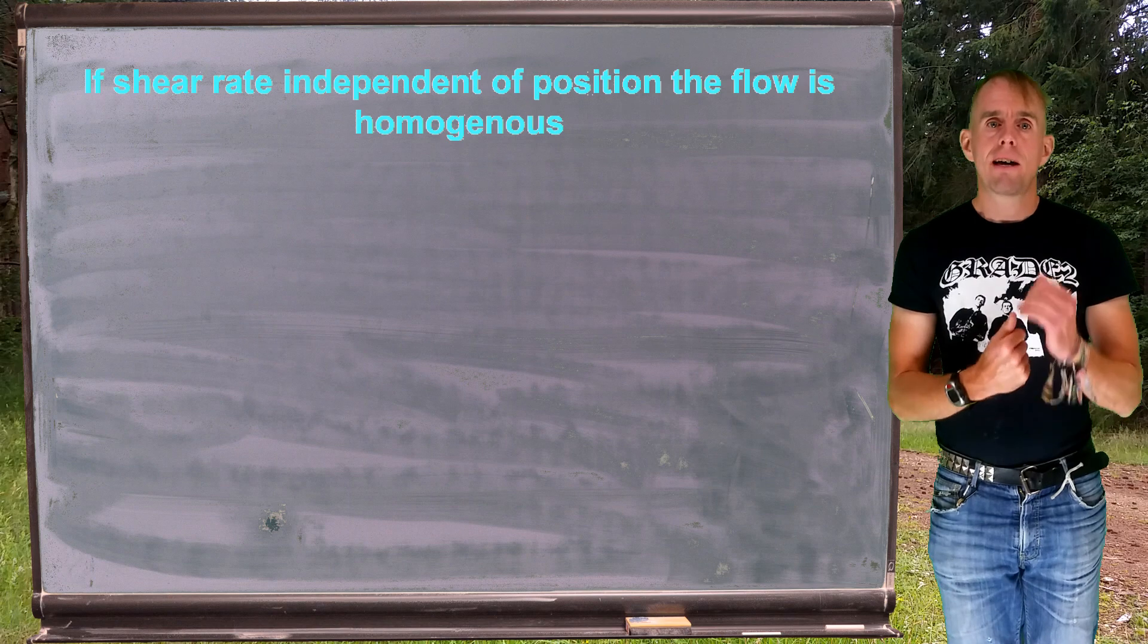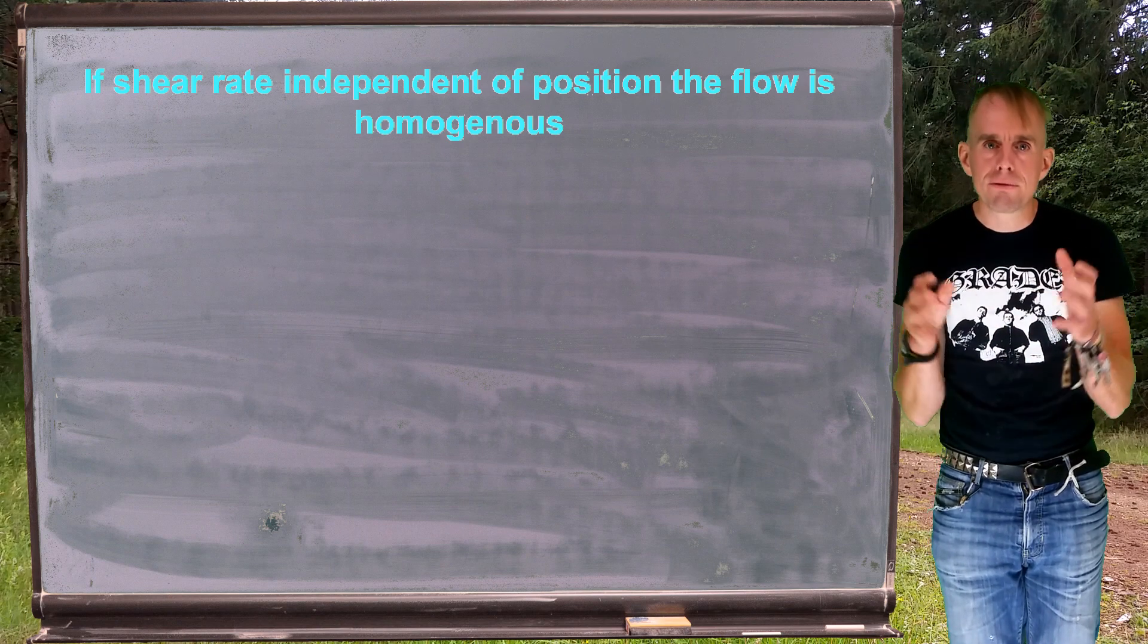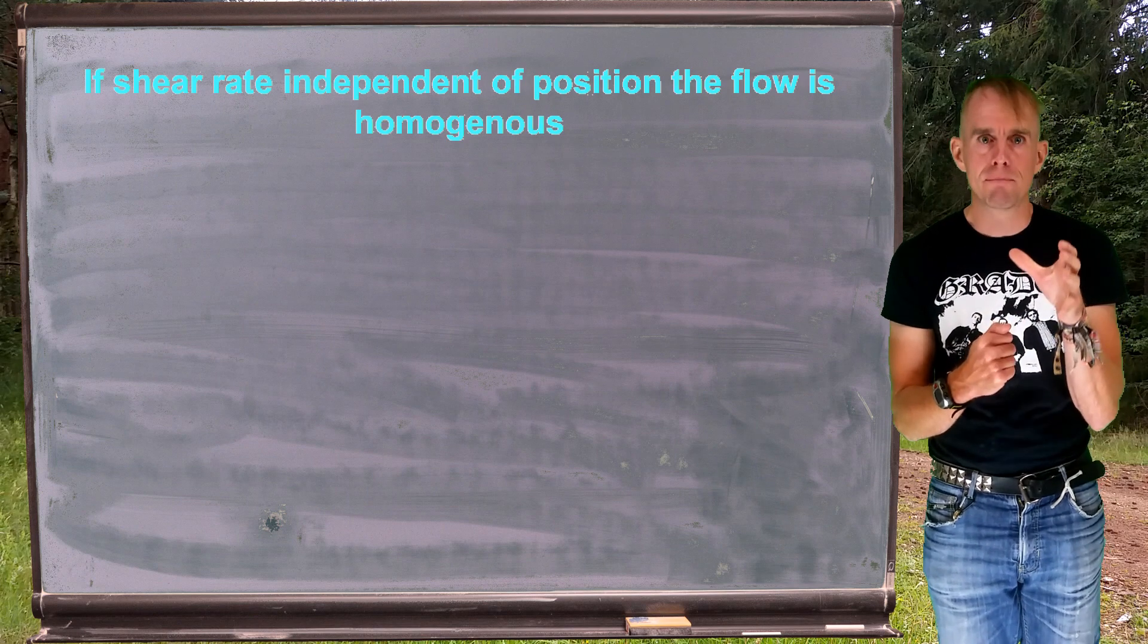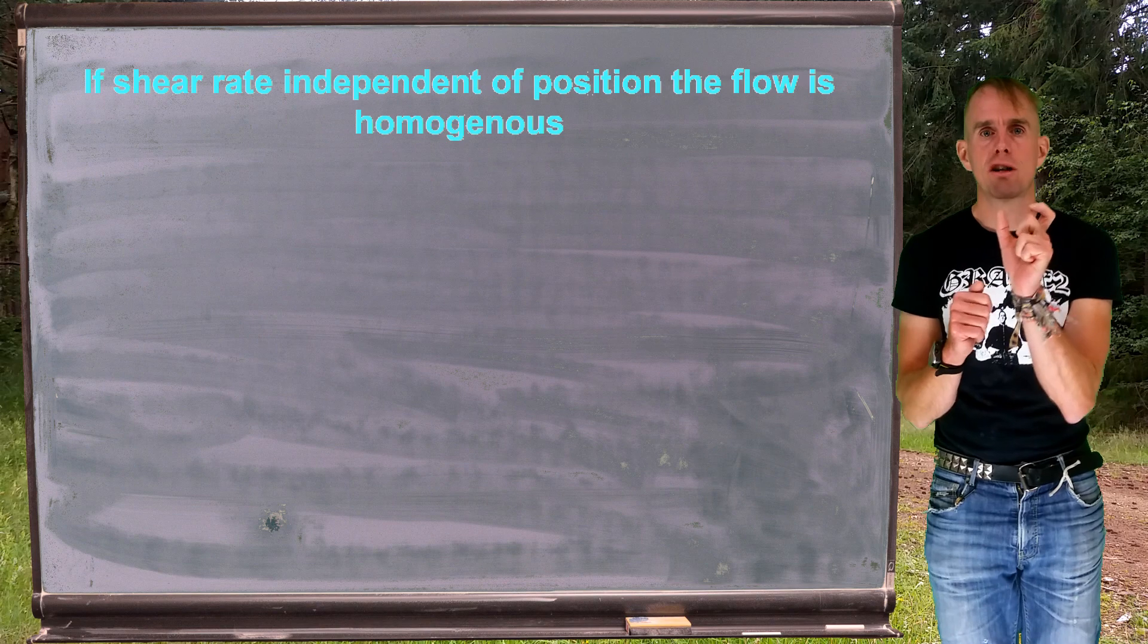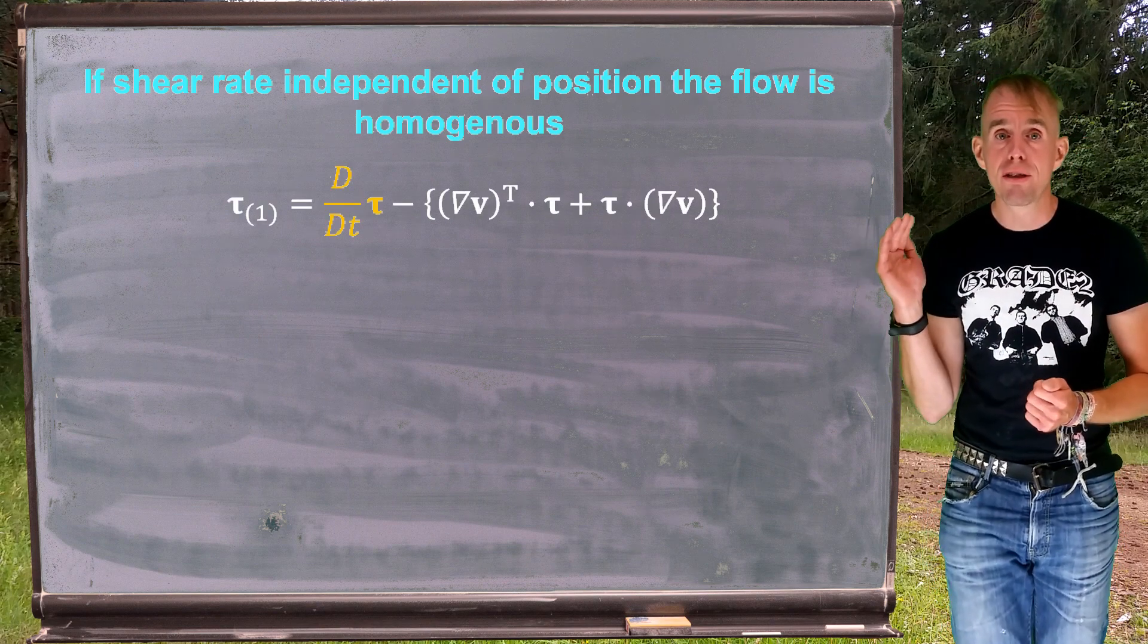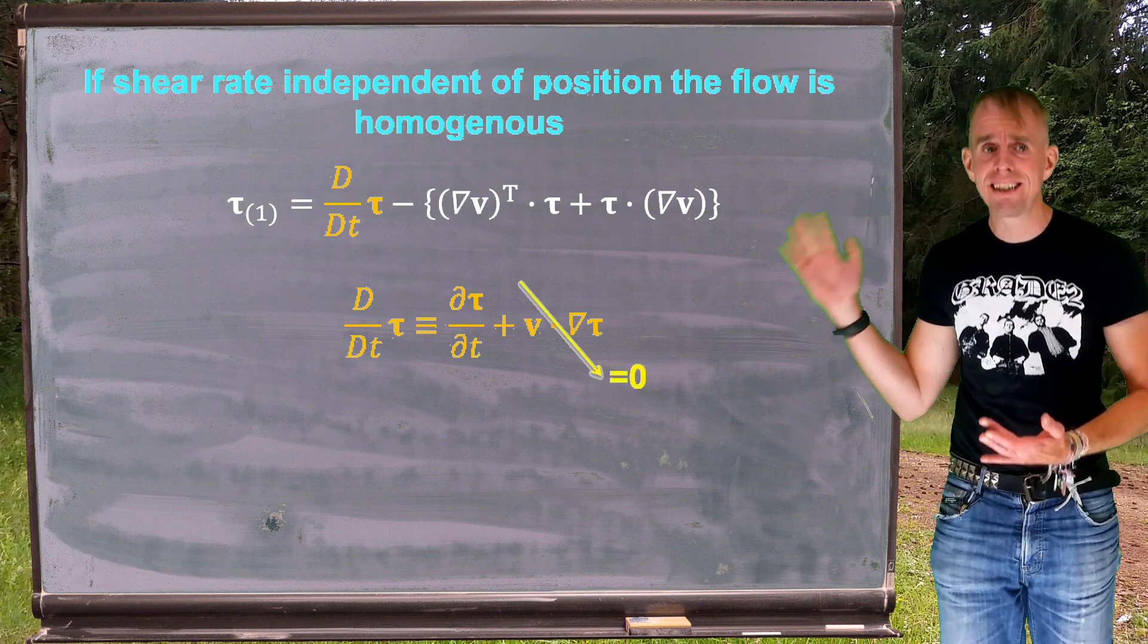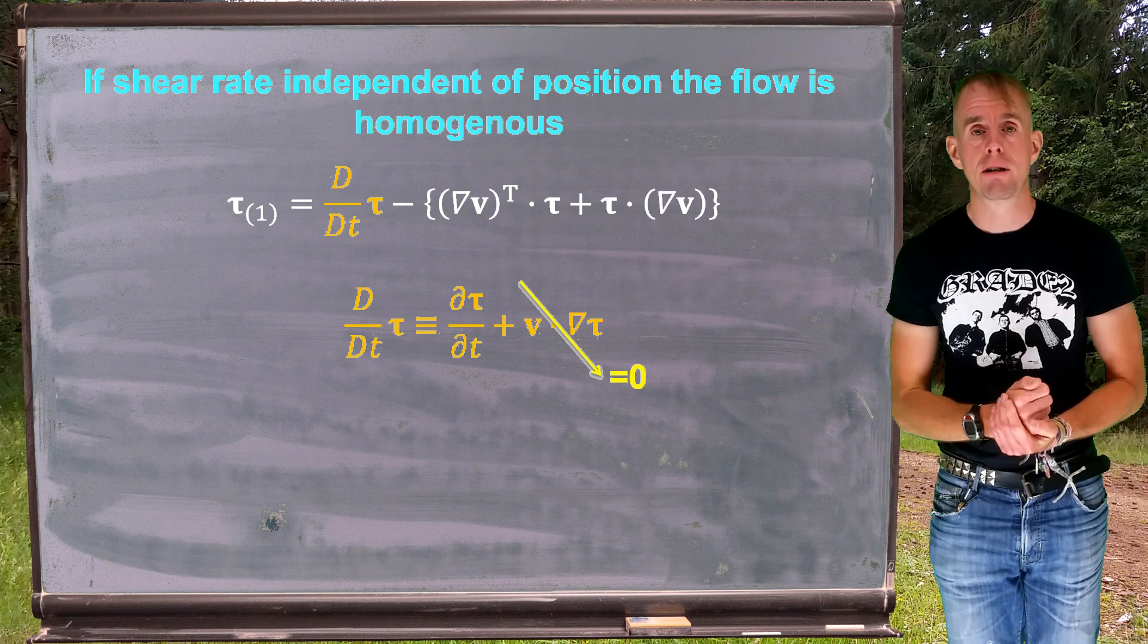There is a simplification we can use because if you think about the first upper convected time derivative of the stress tensor, it involves the total derivative, big D by big dt of tau, in which there is that v dot grad tau term. And that grad tau term was third rank. We don't really want to have to deal with third rank tensors unless we really have to. What we'd ideally like to do is set that to zero so we don't have to worry about that third rank tensor. There is a flow simplification that allows us to make that statement, and we call it flow homogeneity.